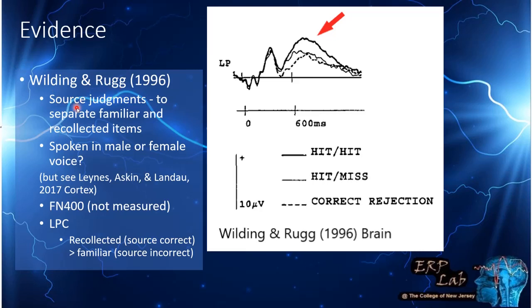In the Wilding and Rugg study, participants did source judgments — studying items from a male or female voice list and then reporting the source. Items that were judged old and old (hit-hit) versus items where the source was incorrect (hit-miss) versus new correct rejections were compared. They found that recollection, as defined by accurate source judgments, elicited a more positive ERP than both new items and source-forgotten items during the LPC window, again linking recollection with the LPC.